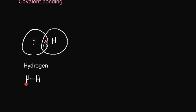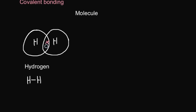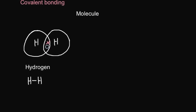You'll see this drawn as an H with a single line attached to another H. The single line represents a covalent bond, which is a pair of electrons, one coming from one atom, the other coming from the other atom. Many students get confused with the term molecule and use it inappropriately. A molecule is only when you have atoms joined together with covalent bonds. If it's ionic bonds or metallic bonds, it's not a molecule.